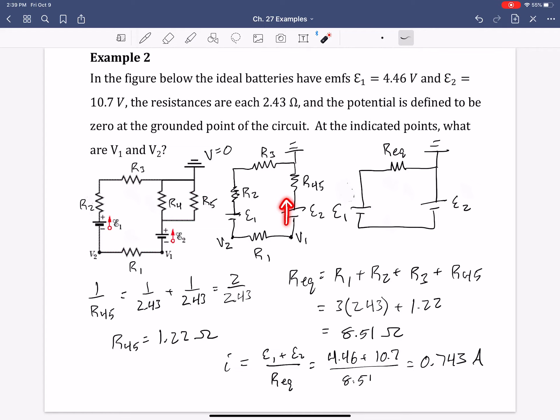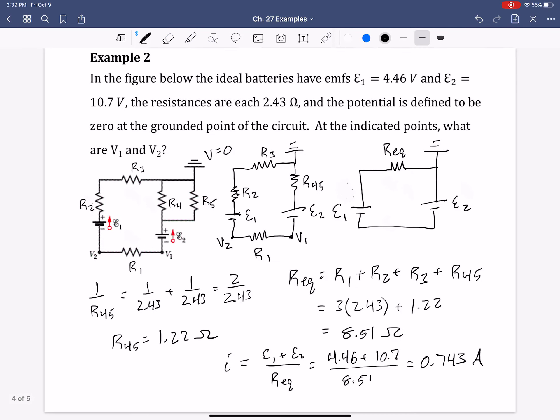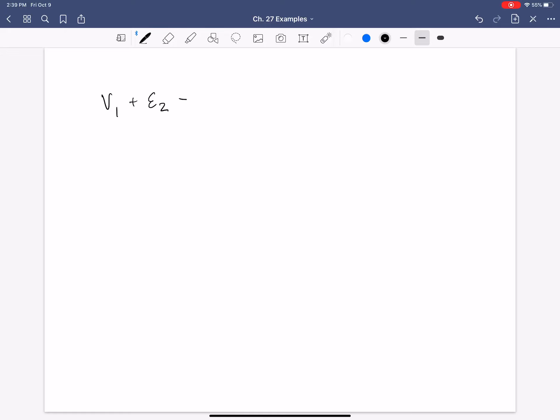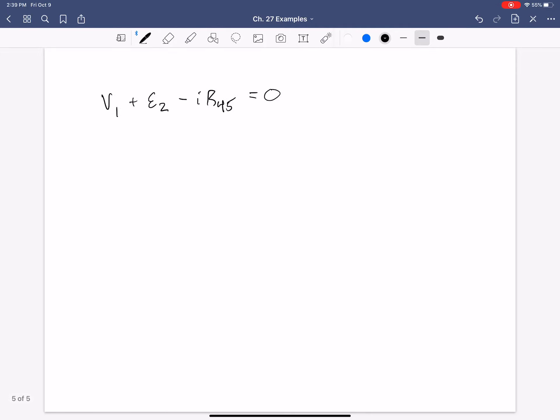meaning, since we're going in this direction, we increase the voltage. So, plus the value for E2, and then, since we're going across R45, we have to have a voltage drop, equivalent to the current times the resistance 45. And so that should bring us down to 0 at the ground right there.